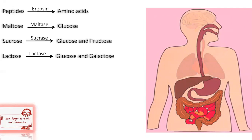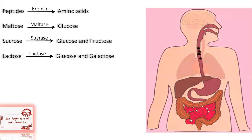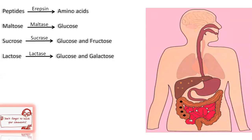Through the action of these enzymes, the ingested food is completely digested in the ileum of the small intestine. Therefore, it is in the small intestine that carbohydrates are broken down into simple sugars such as glucose, fats are broken down into fatty acids and glycerol, and proteins are broken down into amino acids. Once the food is digested, the next step is absorption of the digested food, and the nutrients pass into the blood vessels present in the walls of the small intestine.